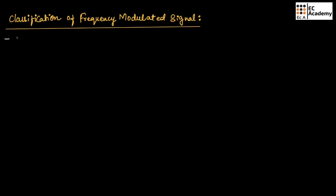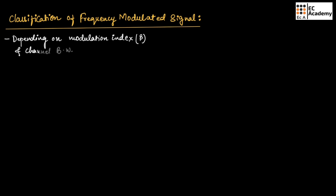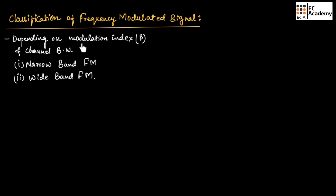Depending upon the value of modulation index beta and channel bandwidth, the FM signals are classified into two types. The first one is narrow band FM and the second one is wide band FM.